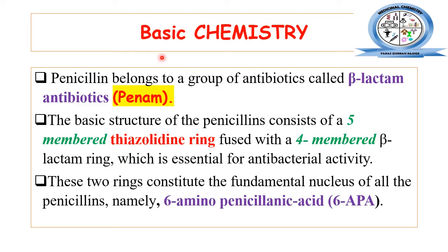Now let's discuss the basic medicinal chemistry of penicillin. If we observe the basic chemical structure of penicillin, we can see that penicillin belongs to the class of beta-lactam antibiotics. The name beta-lactam antibiotic is given to the penicillin class on the basis of their chemical structure. On this basis, penicillin contains the penem ring nucleus of the beta-lactam.